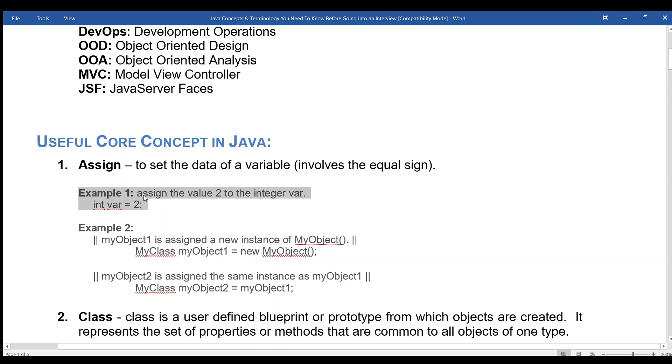Example 1: assign the value 2 to the integer var intVar equals 2. Example 2: myObject1 is assigned a new instance of MyObject. MyClass myObject1 equals new MyObject. myObject2 is assigned the same instance as myObject1. MyClass myObject2 equals myObject1.